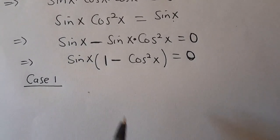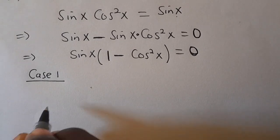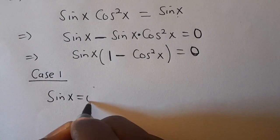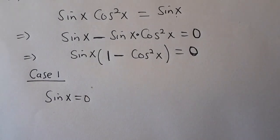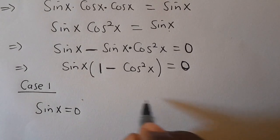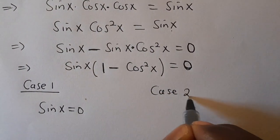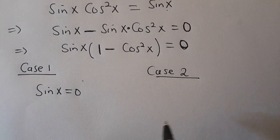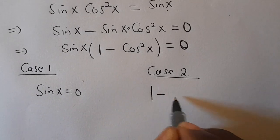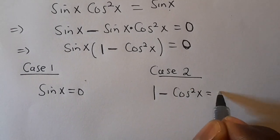Now from here, let's consider case one: sin(x) equals 0. And likewise for case two, we can also have 1 minus cos²(x) equals 0.